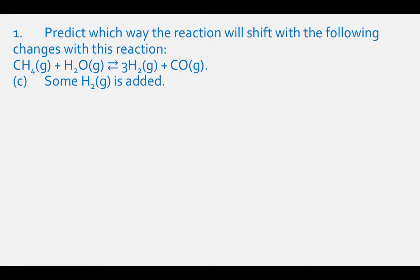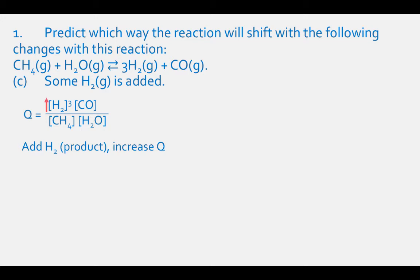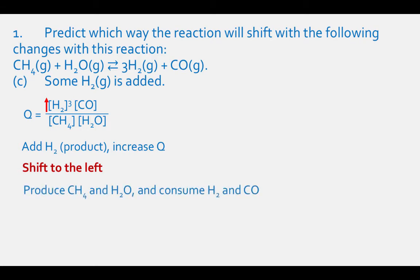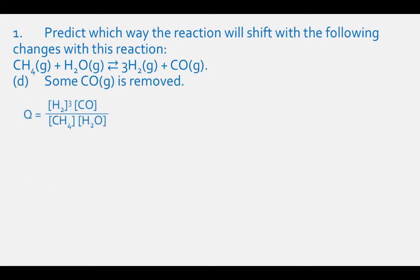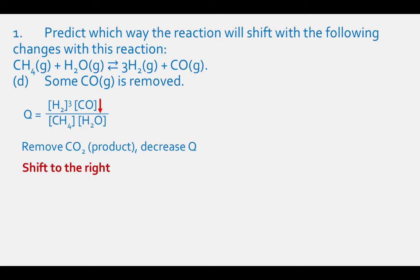For part D, when we remove some CO, which is a product, we will lower the value of Q because we are decreasing the numerator. Therefore, the reaction will shift to the right. The reaction will respond by consuming reactants CH4 and H2O and producing products H2 and CO.